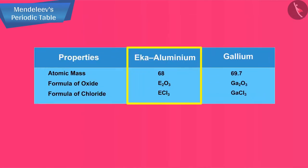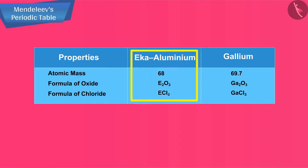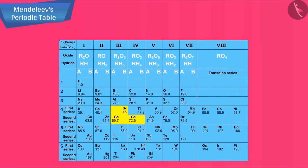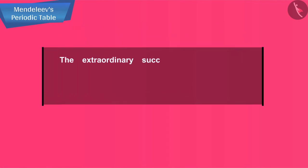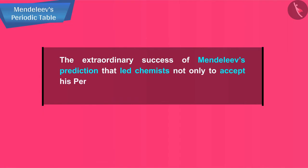The properties of Eka aluminum predicted by Mendeleev and those of the element gallium which was discovered later and replaced Eka aluminum, this table provided convincing evidence for both the correctness and usefulness of Mendeleev's periodic table. Further, it was the extraordinary success of Mendeleev's prediction that led chemists not only to accept his periodic table but also recognize him as the originator of the concept on which it is based.